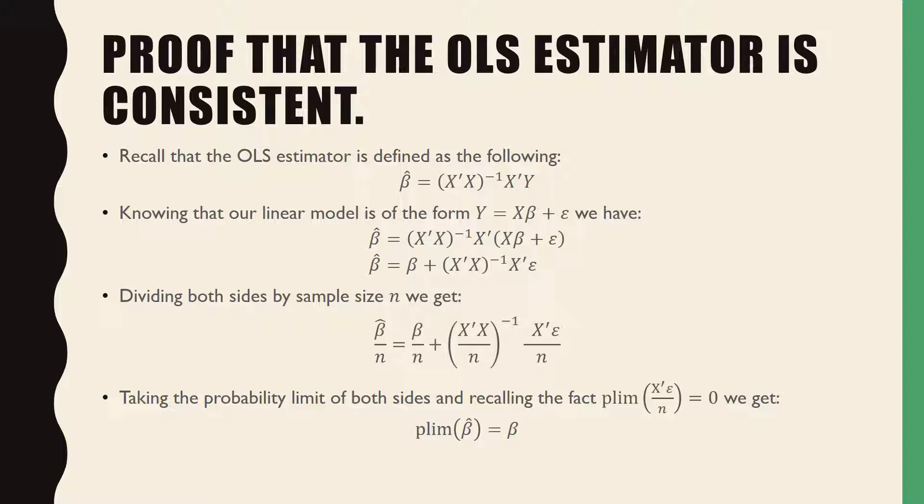Now let's divide both sides by our sample size n. We get the following expression. Taking the probability limit of both sides and recalling the fact that plim(X'ε/n) = 0, we get plim(β̂) = β, which is our true parameter.